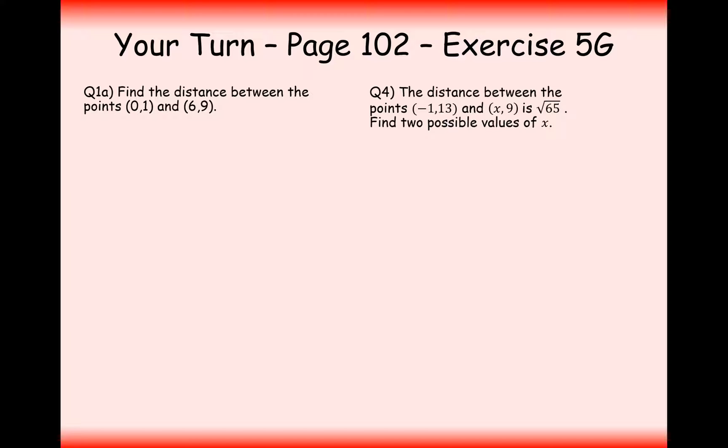Right, okay, well done for having a go at these two questions here. Let's crack on with question 1. The coordinate (0,1) is here. The coordinate (6,9) is way up here. So the difference in the x coordinates is going to be 6. The difference in the y coordinates is going to be 8. So it's square root of 6 squared add 8 squared, which is 10. So the answer here is 10 units.